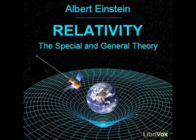Let us consider this for a moment. We are acquainted with space-time domains which behave approximately in a Galilean fashion under suitable choice of reference body, i.e. domains in which gravitational fields are absent. If we now refer such a domain to a reference body K' possessing any kind of motion, then relative to K', there is a gravitational field which is variable with respect to space and time. The character of this field will of course depend on the motion chosen for K'. According to the general theory of relativity, the general law of the gravitational field must be satisfied for all gravitational fields obtainable in this way. Even though by no means all gravitational fields can be produced in this way, yet we may entertain the hope that the general law of gravitation will be derivable from such gravitational fields of a special kind.